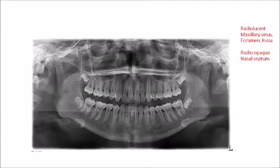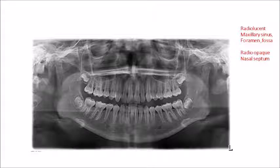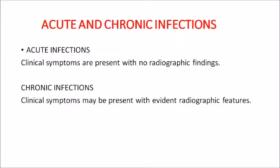Most restorative materials are radiolucent in nature. Structures that are radiolucent include the maxillary sinus and the mental foramen, which is seen between the two lower premolars. All body structures and bones are radiopaque. Along with that, the nasal septum is radiopaque.